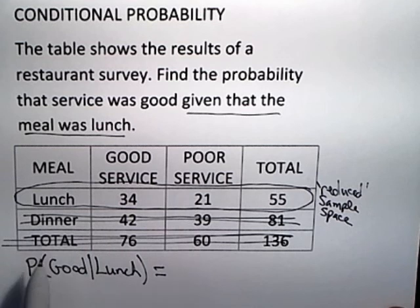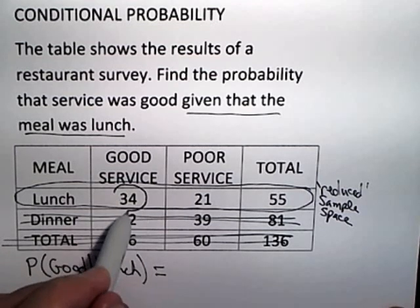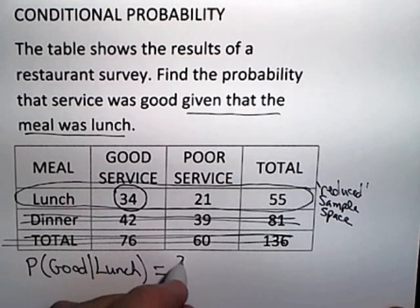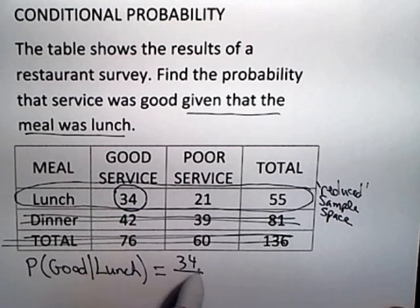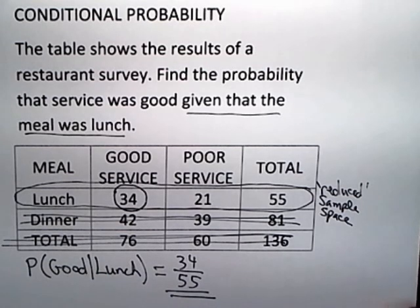Within the reduced sample space, the probability that the service was good given lunch would be 34 good services over a total of 55. If needed, you'd reduce the fraction, but 34 over 55 does not reduce.